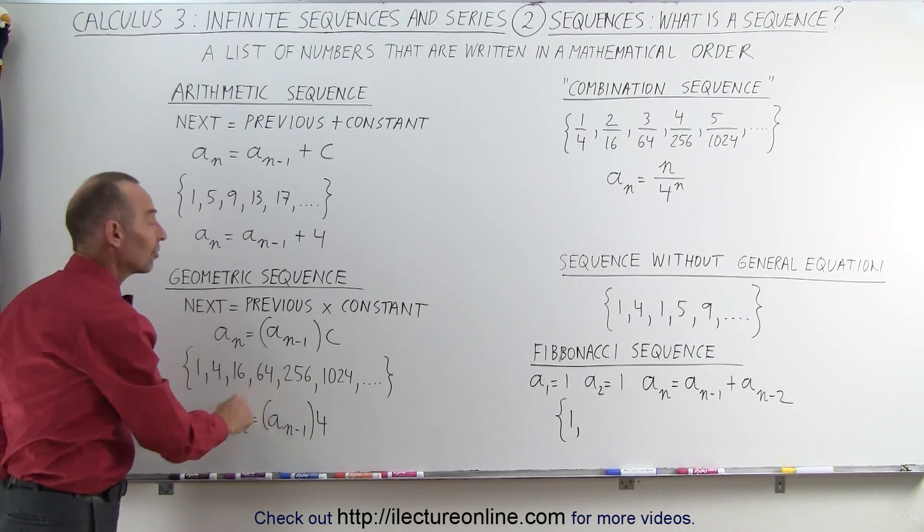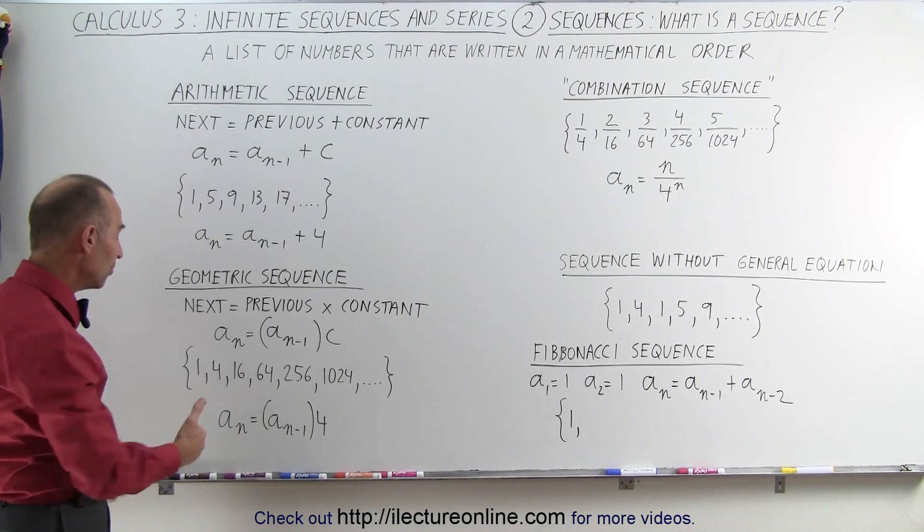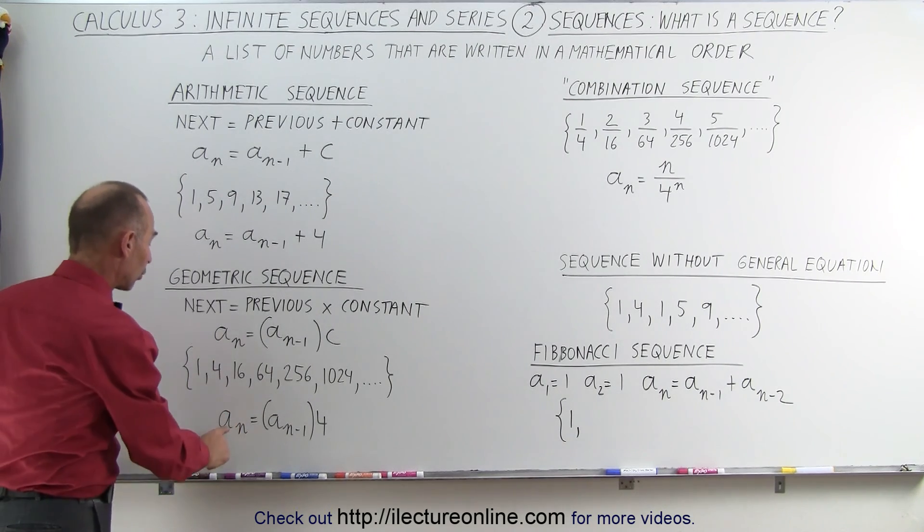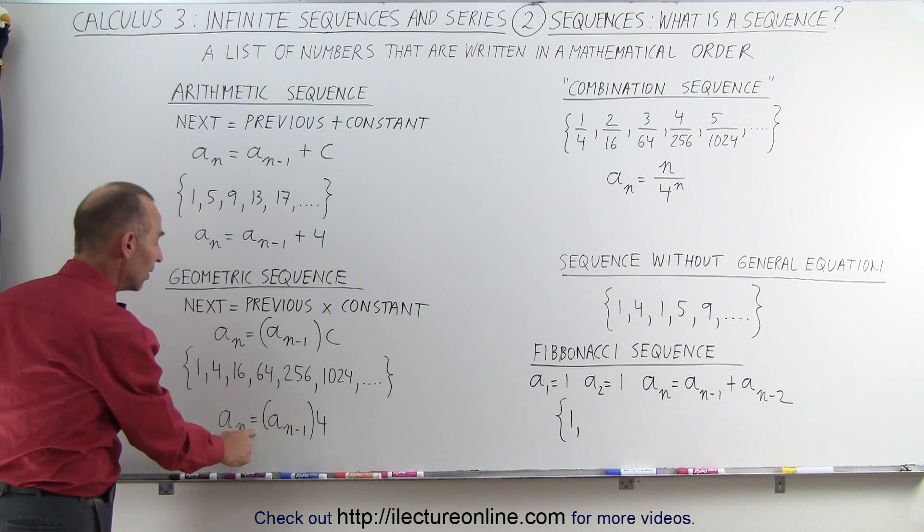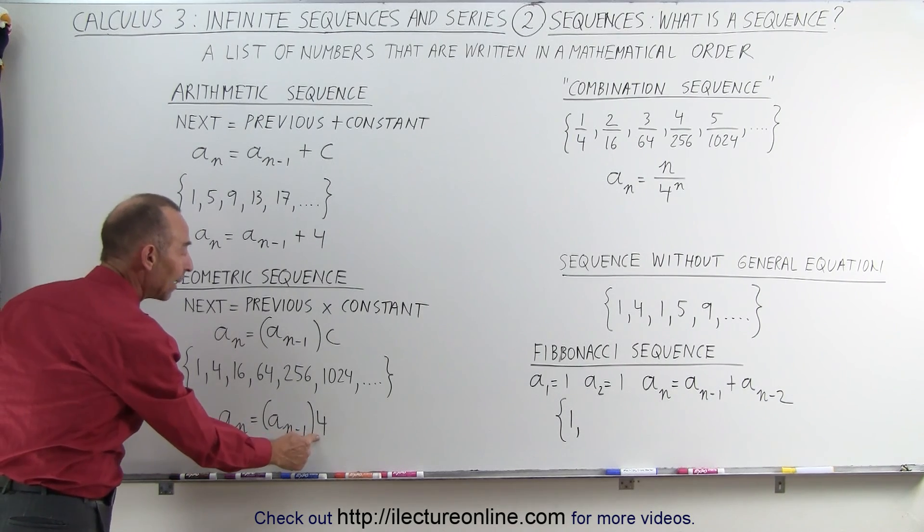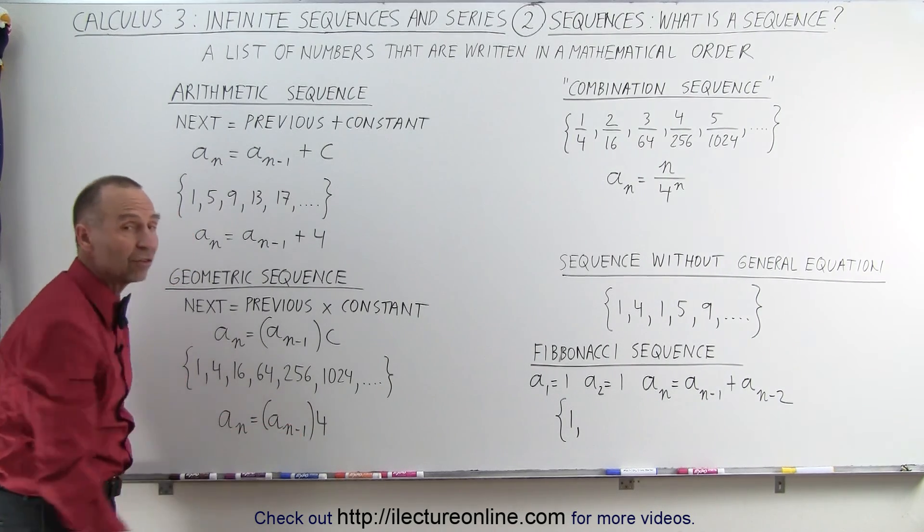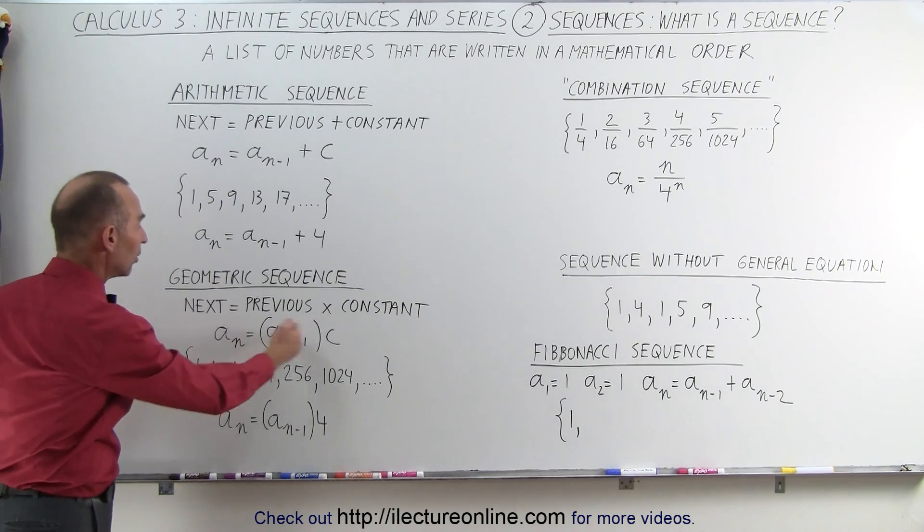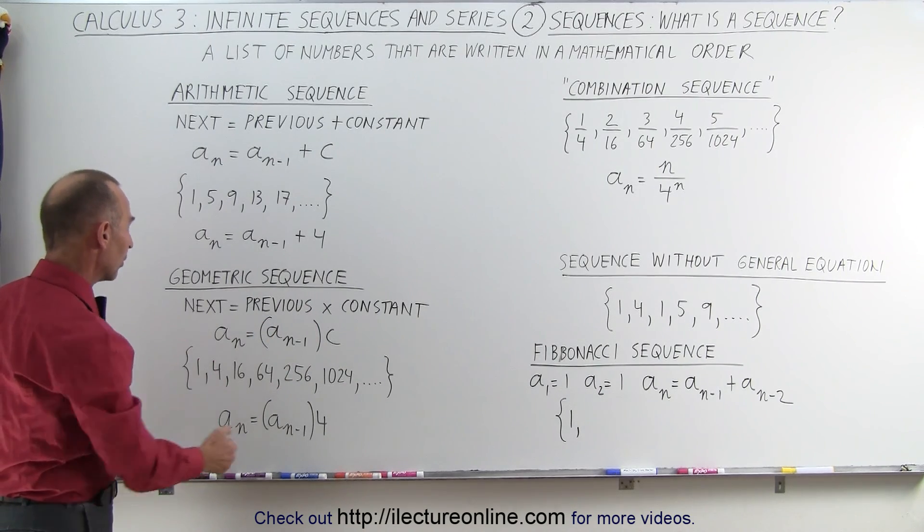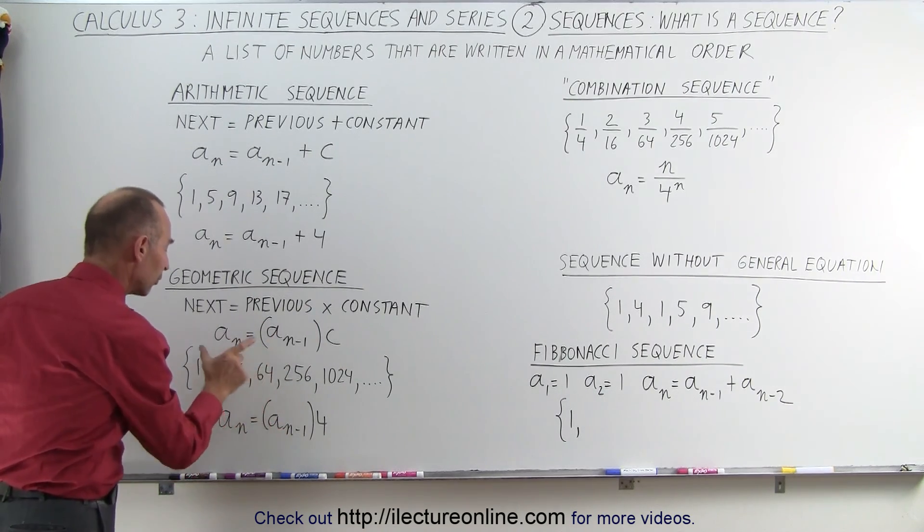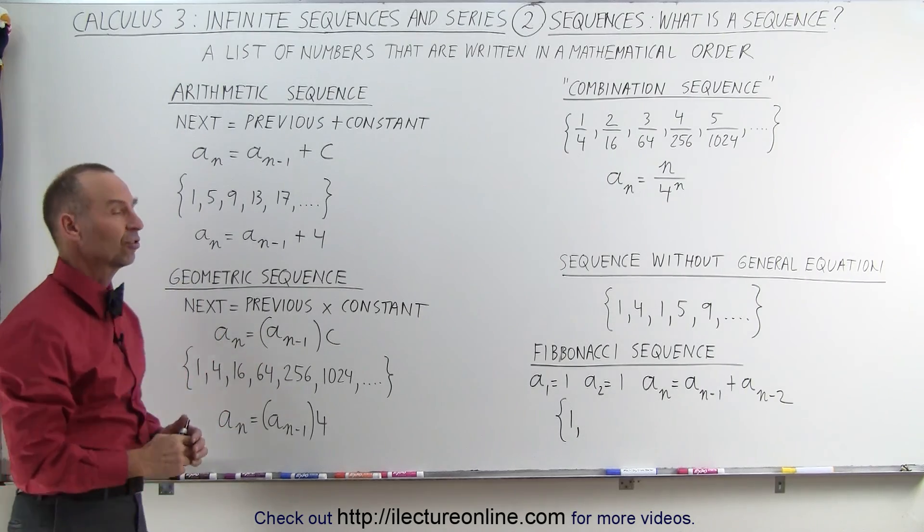Which means the general equation is that the current number in the sequence is equal to the previous number times a constant. In this case, the constant is the number 4. This is the general equation of a geometric sequence. This is the particular equation for this particular geometric sequence.